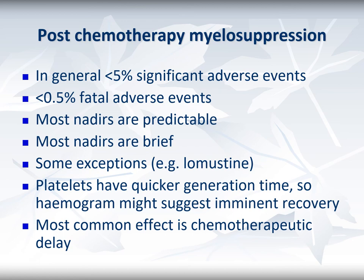The risk of post-chemotherapy sepsis is actually quite low — in general less than 5% significant adverse events, with less than 0.5% fatal adverse events in chemotherapy-treated patients. Although most neutropenias are predictable for most drugs, some are less so, such as mustine which can have a bifid nadir and be very unpredictable. Most nadirs are also brief, giving only two or three days of suppression. Sometimes platelets recover first due to quicker generation time, so a hemogram may suggest imminent neutrophil recovery is pending. The most common effect of neutropenia is subsequent chemotherapeutic delay.